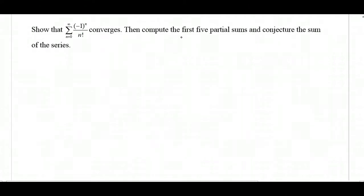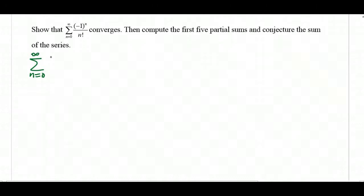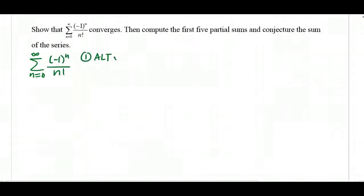Then we'll compute the first five partial sums and conjecture the sum of the series. So if we have the sum from n equals 0 to infinity of negative 1 to the n over n factorial, first, this is alternating — it has the negative 1 to the n term.